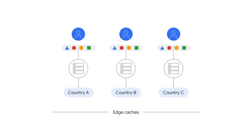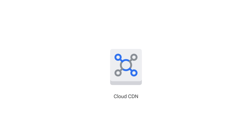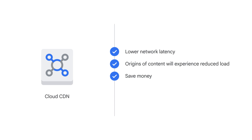Google also has a global system of edge caches. Edge caching refers to the use of caching servers to store content closer to end users. You can use this system to accelerate content delivery in your application by using Cloud CDN, Content Delivery Network. This means your customers will experience lower network latency, the origins of your content will experience reduced load, and you can even save money.